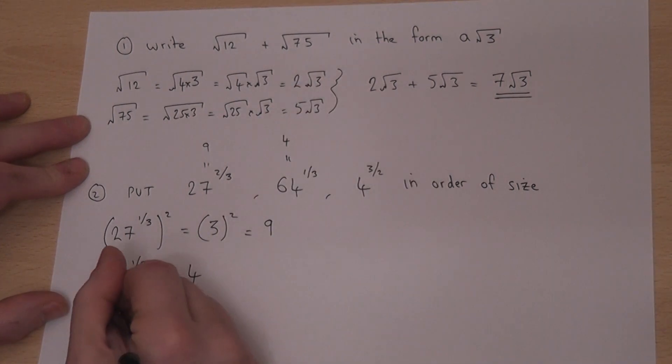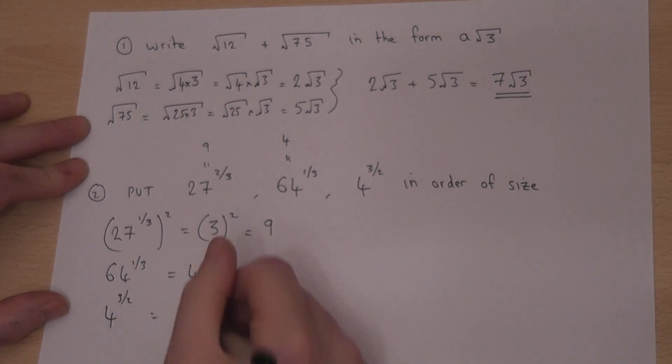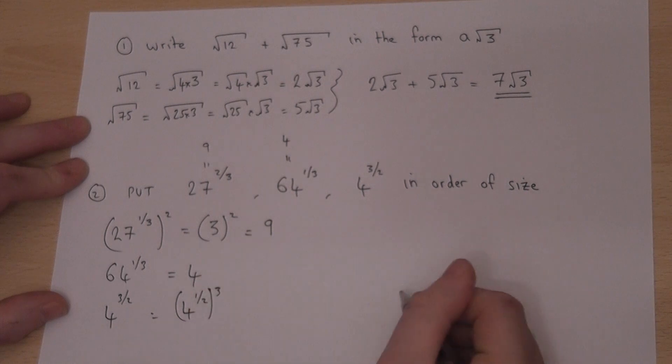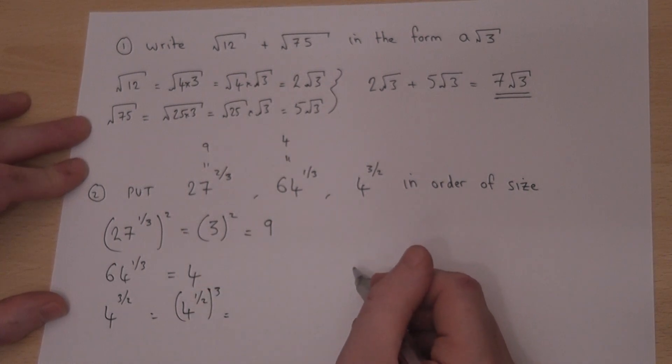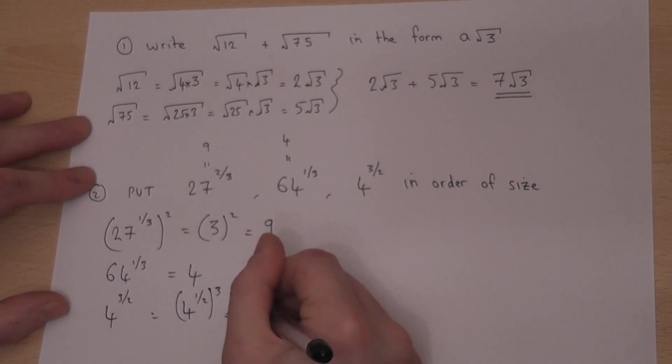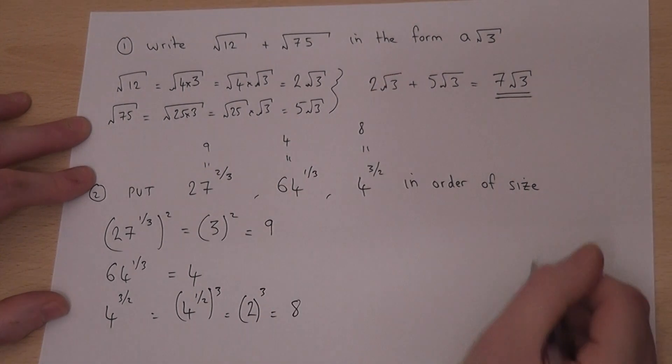And finally, 4 to the power of 3 over 2. Well this is the same as 4 to the half, i.e. over 2, all cubed. Well, the power of a half means square root. Or what number squared gives 4? Well that's 2. So this equals 2 cubed. And 2 cubed just equals 8. So therefore that number equals 8.